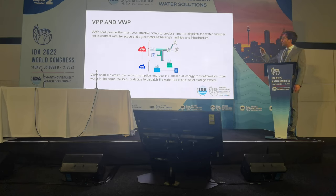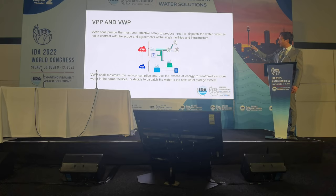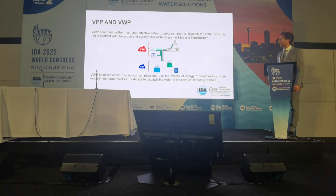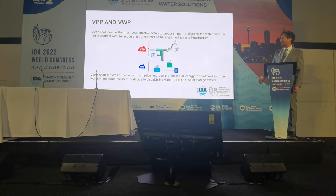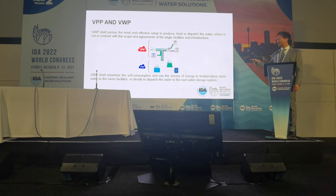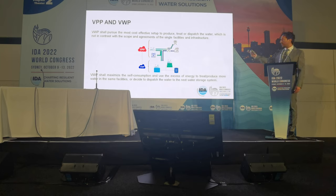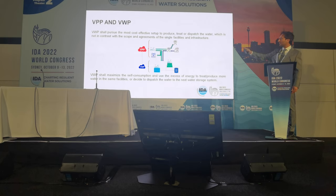This is a kind of logistic where the virtual power plant manages energy from the network, distributing the surplus of energy to the network or transferring it to a battery bank for storage, while the virtual water plant maximizes self-consumption in the water facilities, managing the dispatching and production of water. Only if self-consumption cannot be used does it transfer control of the energy to the virtual power plant, which can then trade the energy with the network or store it in a battery bank.